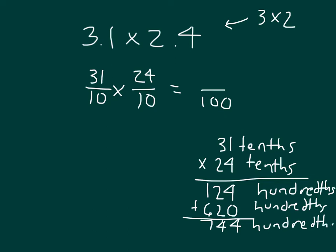We have 744 hundredths, which as a decimal is written 7.44. That's 7 and 44 hundredths. Now, why is it that our estimate was 6? That was about 3 times 2, which equals 6.